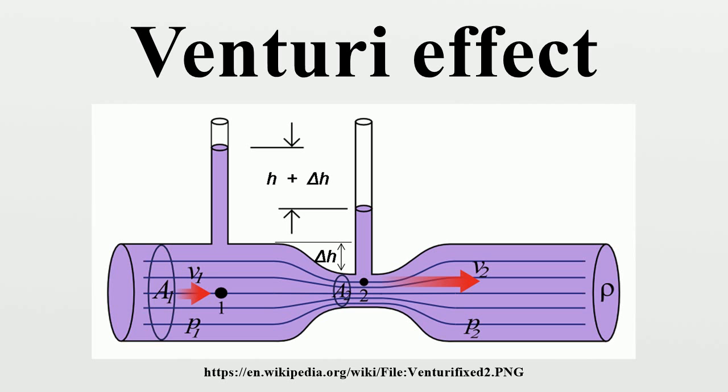Venturi tubes are also used to measure the speed of a fluid, by measuring pressure changes at different segments of the device. Placing a liquid in a U-shaped tube and connecting the ends of the tubes to both ends of a Venturi is all that is needed. When the fluid flows through the Venturi the pressure in the two ends of the tube will differ, forcing the liquid to the low-pressure side. The amount of that move can be calibrated to the speed of the fluid flow.